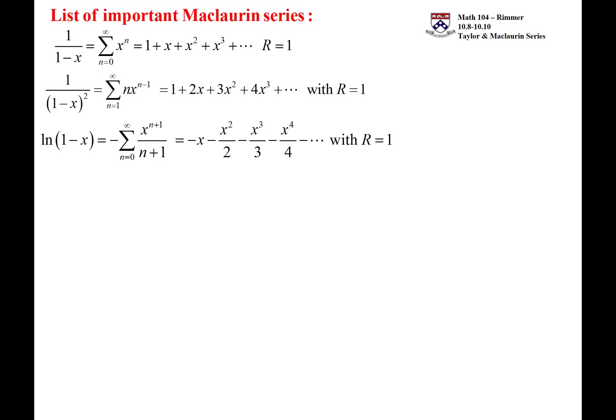Here I have it as the positive log of 1 minus x, so the negative sign has been put to the right-hand side. Then we have the arctan of x, and all of these came from section 10.7.